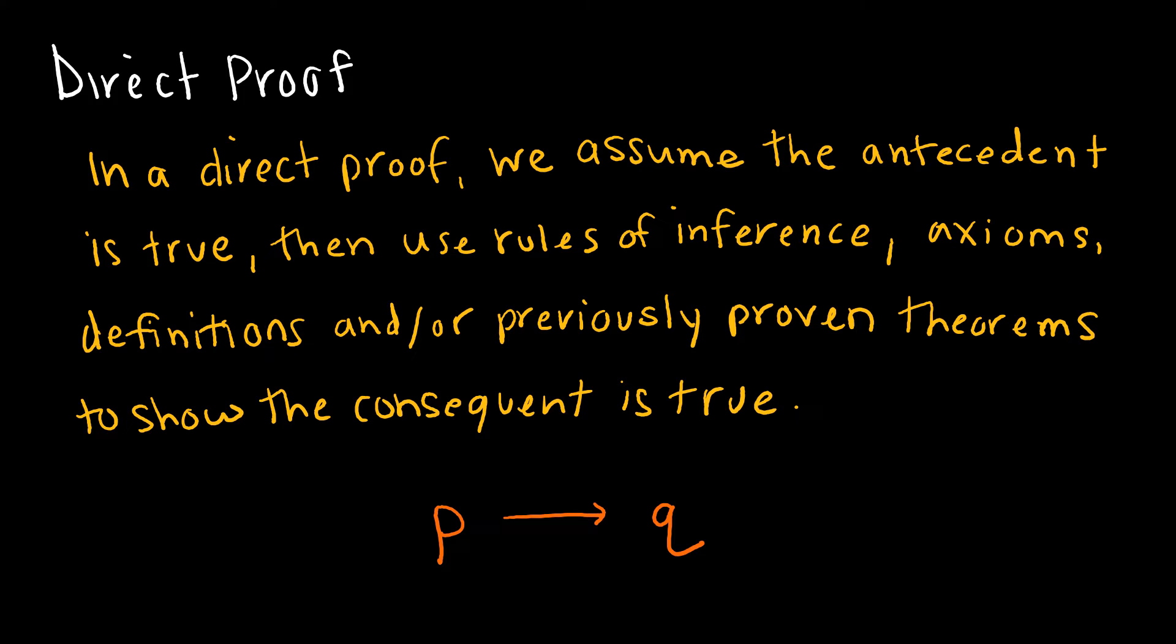So in a direct proof, essentially we are just going to assume that the antecedent is true and then use the rules of inference, axioms, definitions, etc. to show that the consequent is true. So we're assuming P is true, we're proving Q is true.